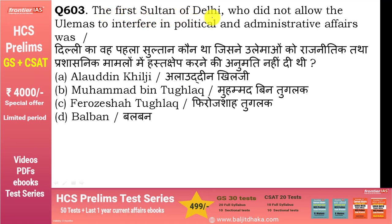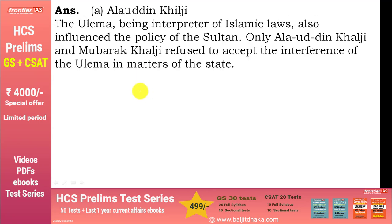The first sultan of Delhi who did not allow the ulemas to interfere in political and administrative affairs was Alauddin Khilji। अलाउद्दीन खिलजी ने policy बना रखी थी कि religion और administration को अलग-अलग रखा जाए। वो एक successful administrator था। Ulemas Islamic laws के interpreter थे और उनका काफी influence था, लेकिन अलाउद्दीन खिलजी और मुबारक खिलजी ने उनकी interference accept नहीं की।